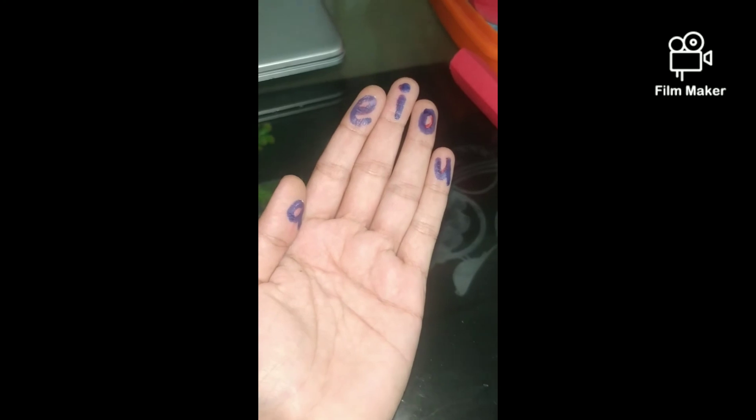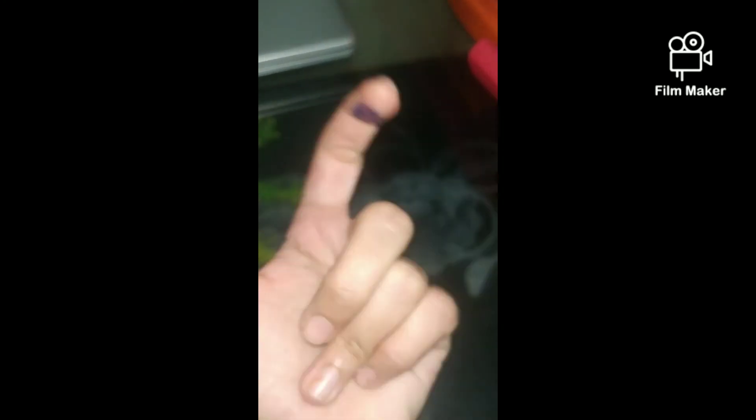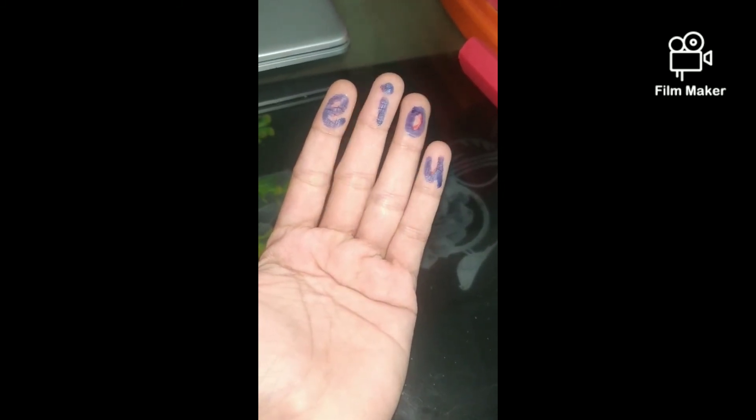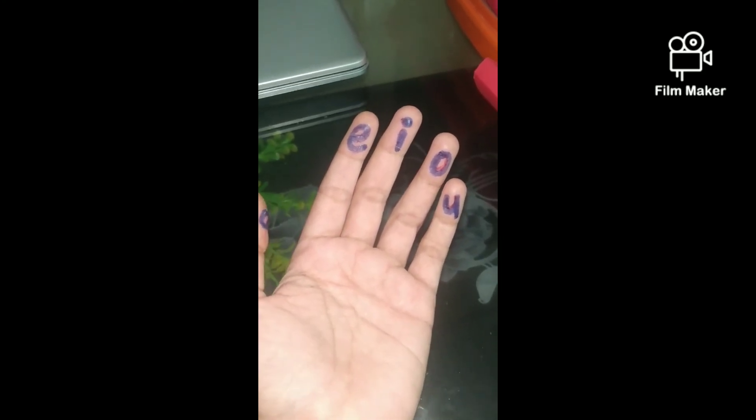Can you remember? What are those letters? A E I O U. Very good children. You got vowels.